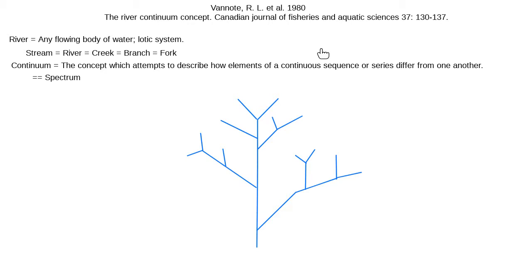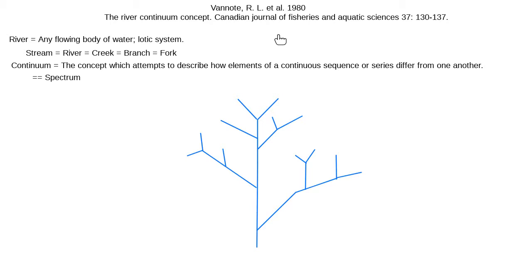First, we should define what these terms mean. A river is any flowing body of water — often referred to as a lotic system. Lotic system provides a lot more depth than the term river, because river equals stream, equals creek, equals branch, equals fork. The best terms are lotic system or stream, both meaning flowing bodies of water without implying a specific size.